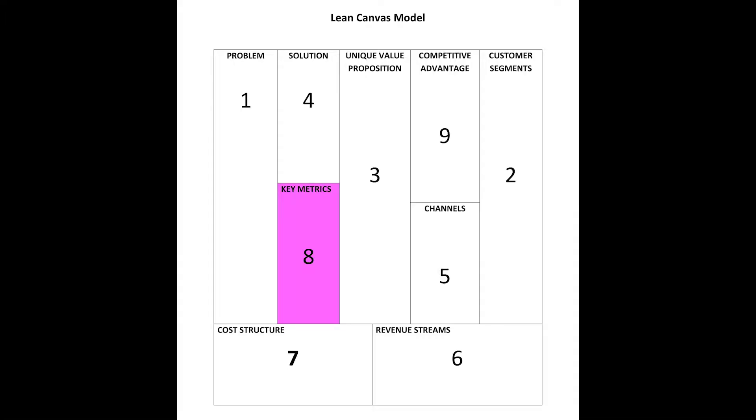Hi, today we're going to be talking about the eighth section of the Lean Canvas model. This is called key metrics.